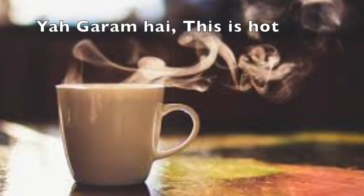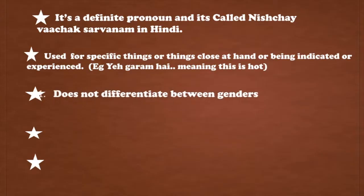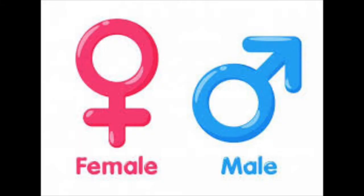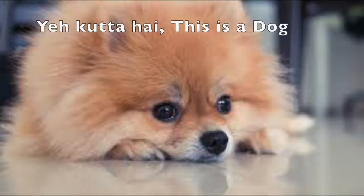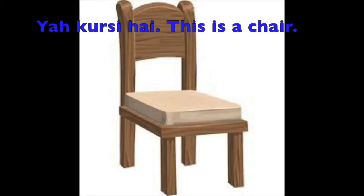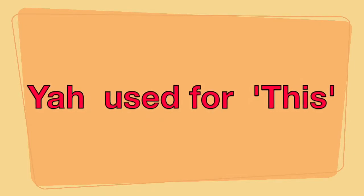For example, if you want to say 'this is hot,' you would say yaha garam hai. Yaha does not affect gender — it doesn't matter whether something is masculine or feminine. It is used for both living and non-living things. For example: yaha kutta hai means 'this is a dog,' and yaha kursi hai means 'this is a chair.' Yaha remains the same regardless.